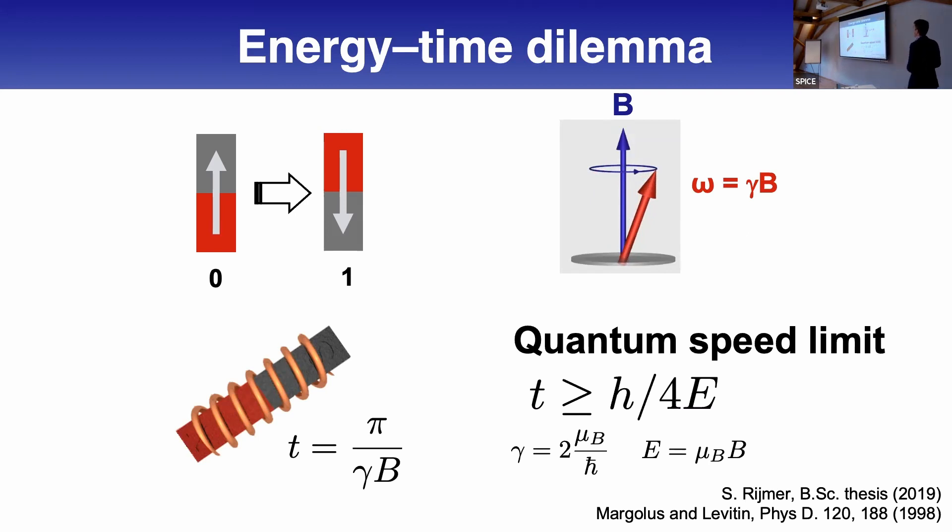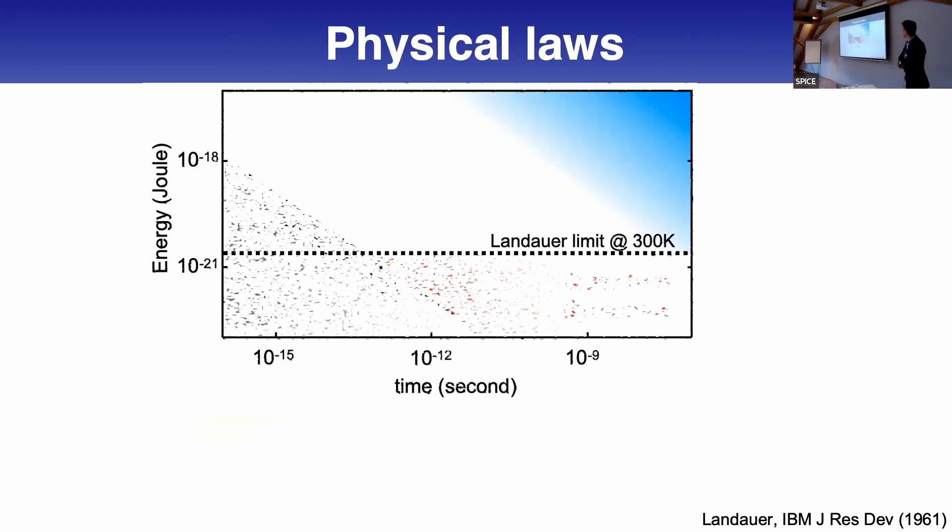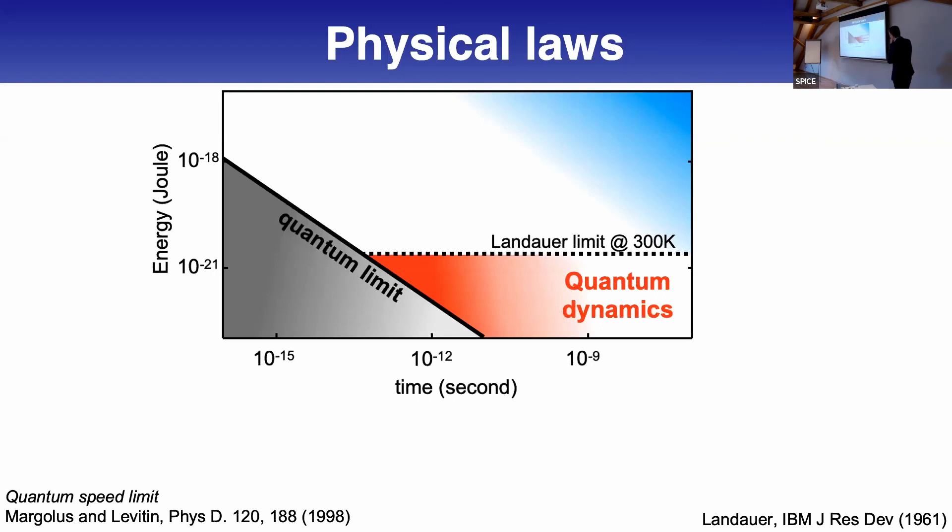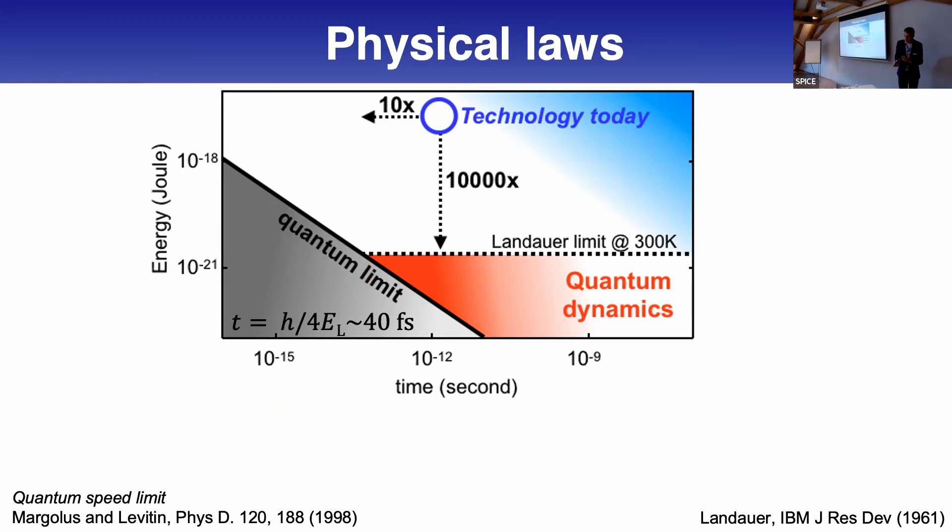Now we have two fundamental limits. One is the limit according to Landauer, just above 10^-21 joules, and we also have this quantum speed limit. The ideal regime is where I accept that somewhere I have to pay this energy, but I never would like to make it more than the Landauer limit.